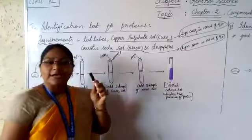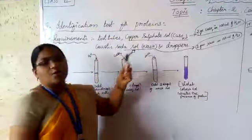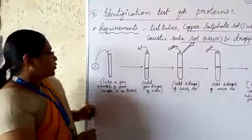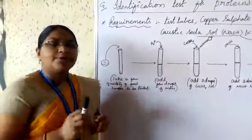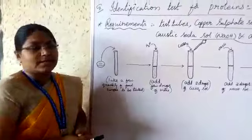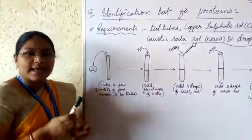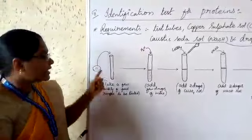Already in last class I showed some pictures of how the residue and droppers will look like. Let us start our test for protein. First, take a few quantity of food sample to be tested for proteins. If you take a solid sample, you have to grind or powder that sample and immediately transfer it to a clean test tube.